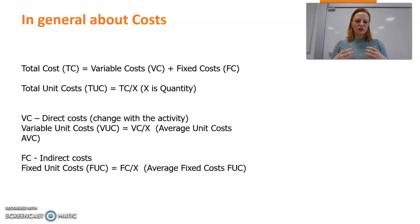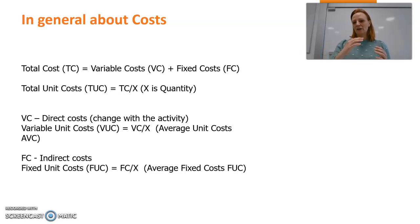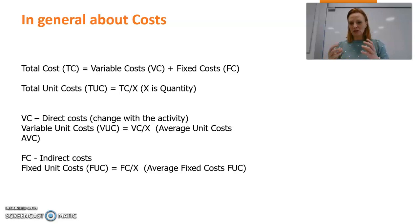So what is the difference between variable and fixed costs? Variable costs are costs directly related to the activity of the company — the activity that creates the revenue. It's not always a direct one-to-one relationship, but variable costs follow the trend of the activity. Total variable cost divided by quantity X gives you the variable unit cost, also called average unit cost.